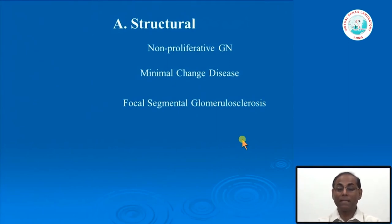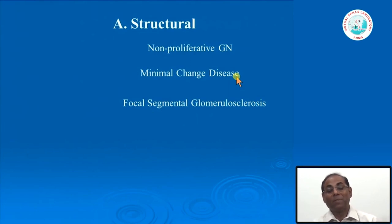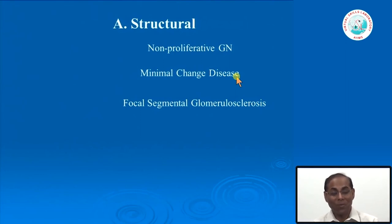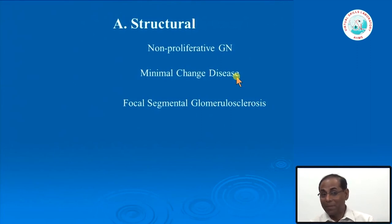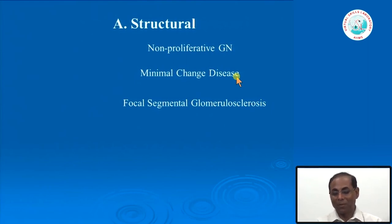For non-proliferative glomerulonephritis, a large number of younger patients and children present with a disease where under the microscope we do not see any changes. That is why this kind of glomerulonephritis is described as minimal change disease, abbreviated MCD. Another situation is where some glomeruli show segmental sclerosis—less than 50 percent of glomeruli involved (focal) with segmental sclerosis—this entity is called FSGS: focal segmental glomerulosclerosis. This is also a non-proliferative glomerular disease.